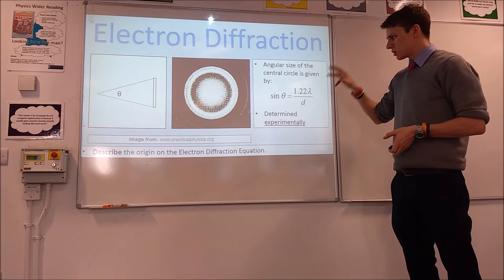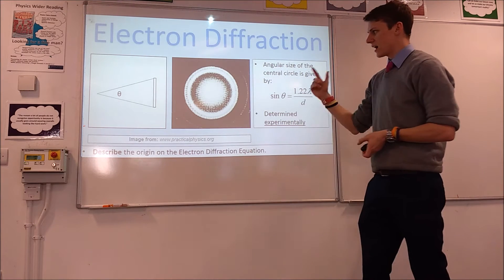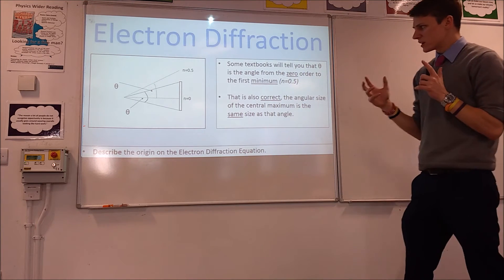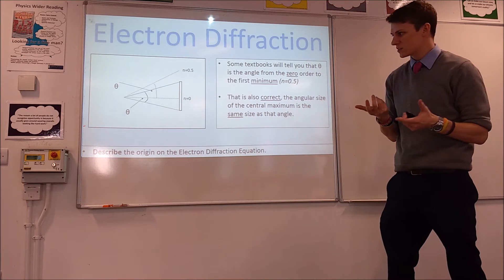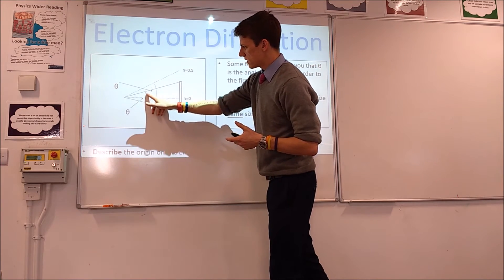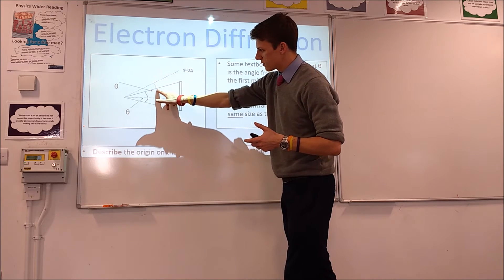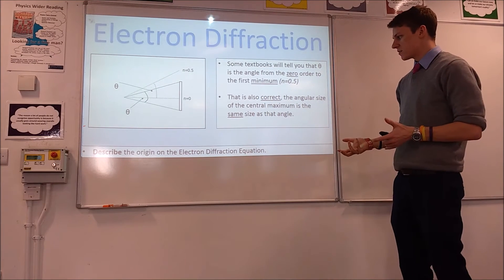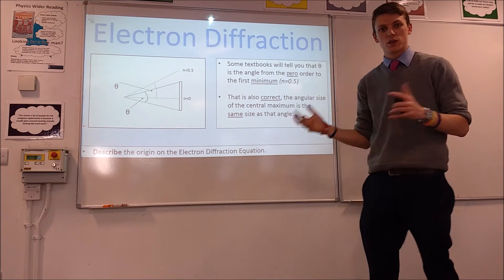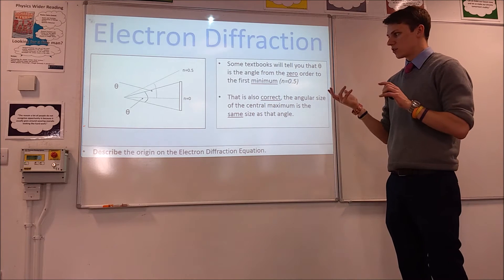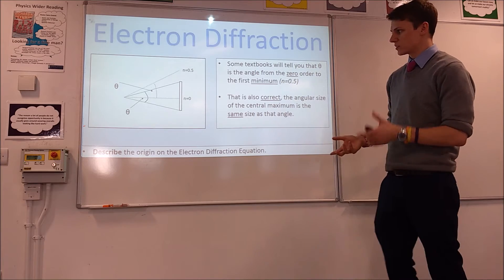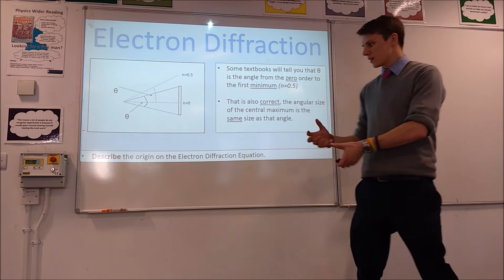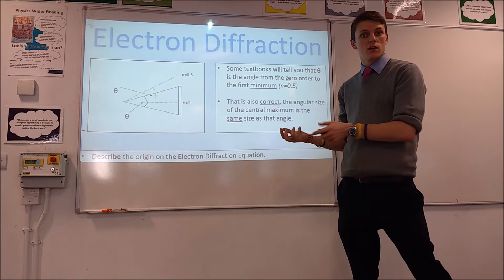Most textbooks don't talk about this angle though — what they talk about is the angle to the first minimum. What you can actually see is that those two are talking about the same thing. The angular size is actually equal to the angle between the zero order and the first minimum. So those two explanations are equivalent, which is why you end up with exactly the same equation whichever of the two you use. Most textbooks typically talk about this angle, and that's how you can go about measuring the actual size of the nucleus.